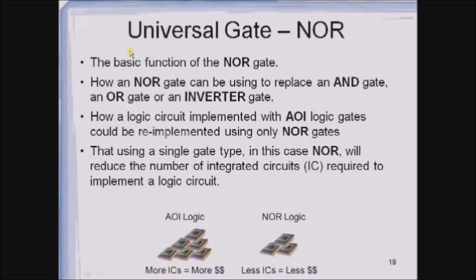Let us see the next universal gate, which is NOR. The things we are going to cover include: the basic function of the NOR gate, how a NOR gate can be used to replace an AND gate, an OR gate, or an inverter gate, how a logic circuit implemented with AOI logic gates could be re-implemented using only NOR gates, and how using a single gate type — in this case NOR — will reduce the number of ICs required to implement a logic circuit.